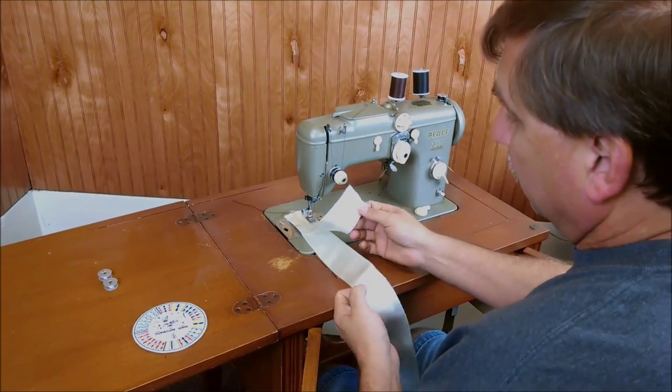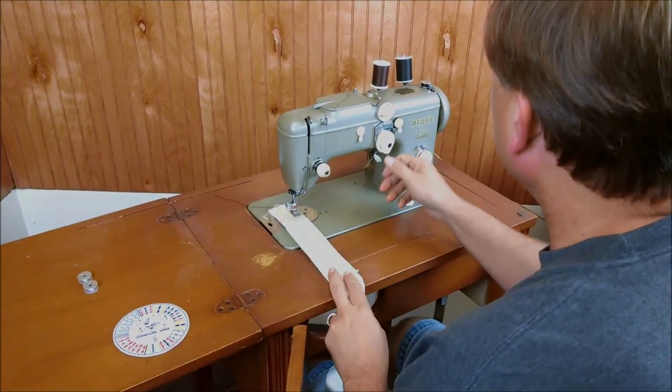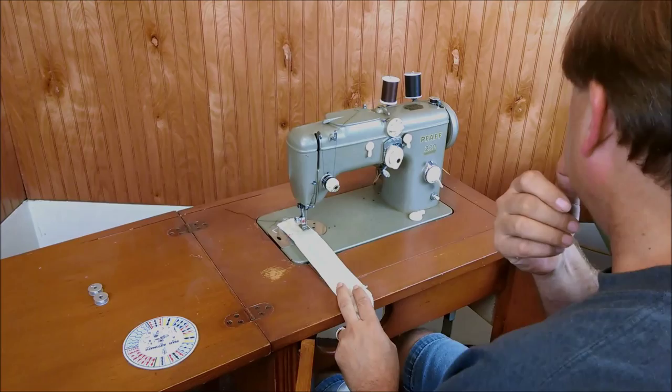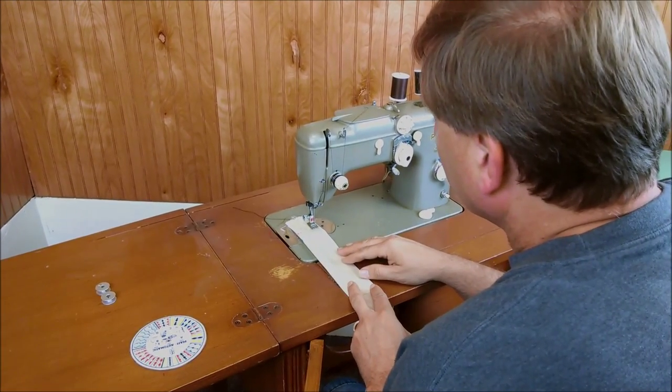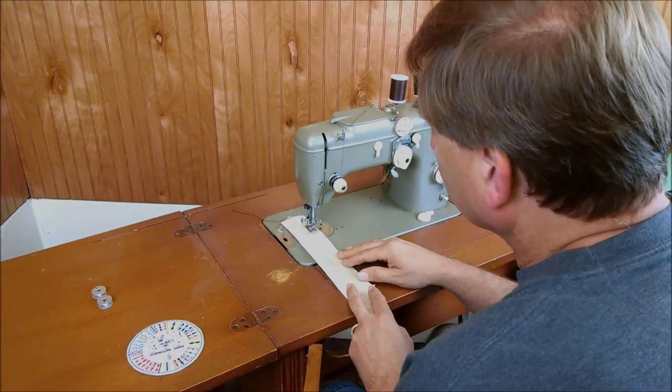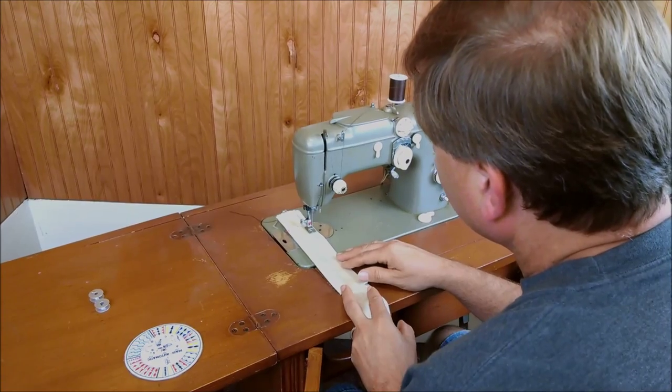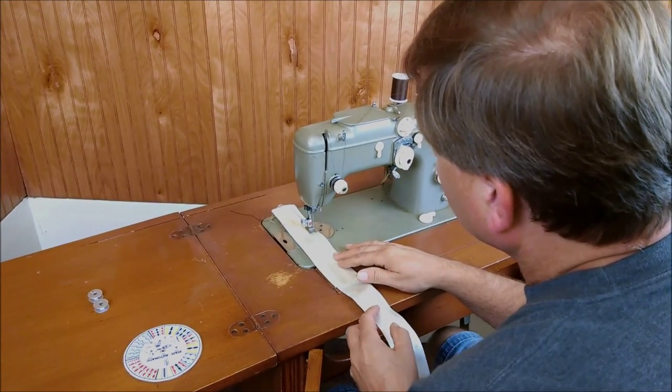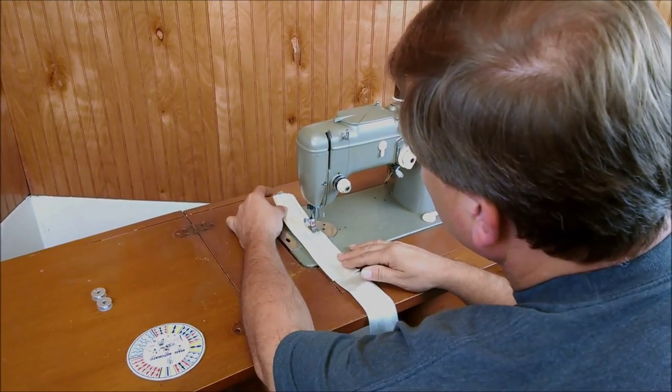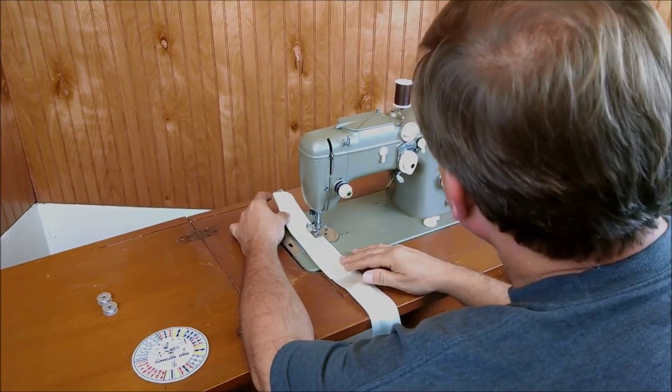Alright, what we have here is some seat belt material. We're just going to demonstrate this on a straight stitch using the knee. So really smooth and easy on that.